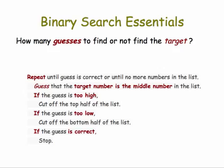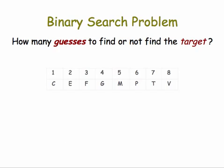You're going to repeat guessing until your guess is correct or you run out of numbers in the list. And your guess is going to be always the middle number in the list. If the guess is too high, you cut off the top half of the list. If it's too low, you cut off the bottom half of the list. And if it's correct, you stop. You found your target. The essential question then is how many guesses to find or not find the target.